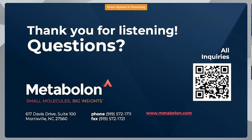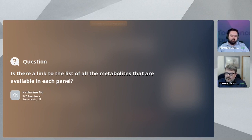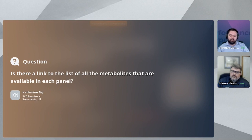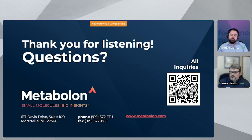For the final question: is there a link to the list of all metabolites available in each panel? We'll put a link to our targeted brochure at the bottom. If you go to our website under Metabolon Targeted, you'll be able to see each panel, and clicking on them will show a spec sheet outlining all the metabolites included and the lower limits of quantitation. If anyone has any other questions, please reach out to us using the QR code on screen to submit any inquiry. Thank you again — we really appreciate everybody attending.